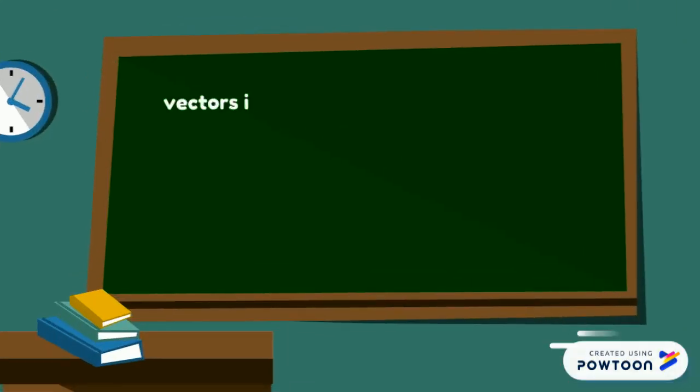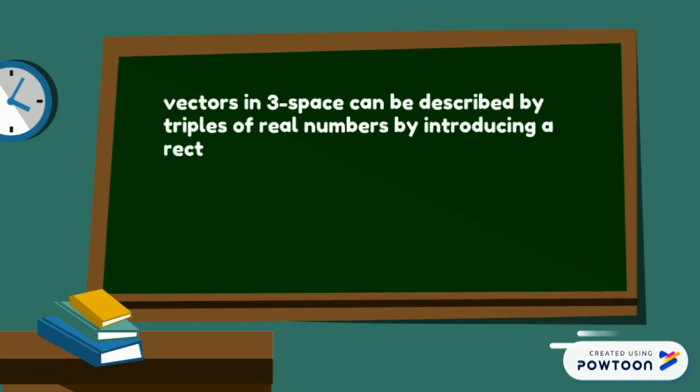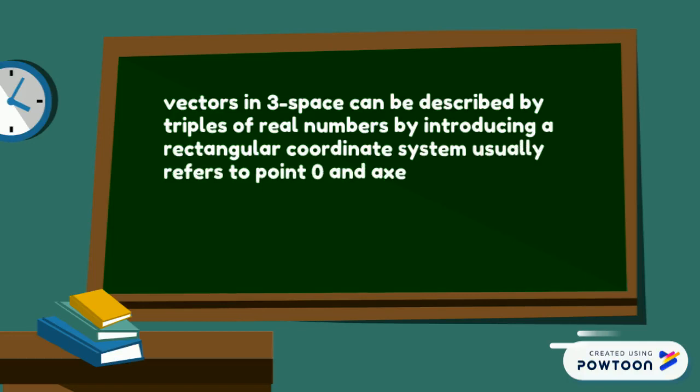Vectors in 3-space can be described by triples of real numbers by introducing a rectangular coordinate system, usually referring to point O and axes X, Y, and Z.